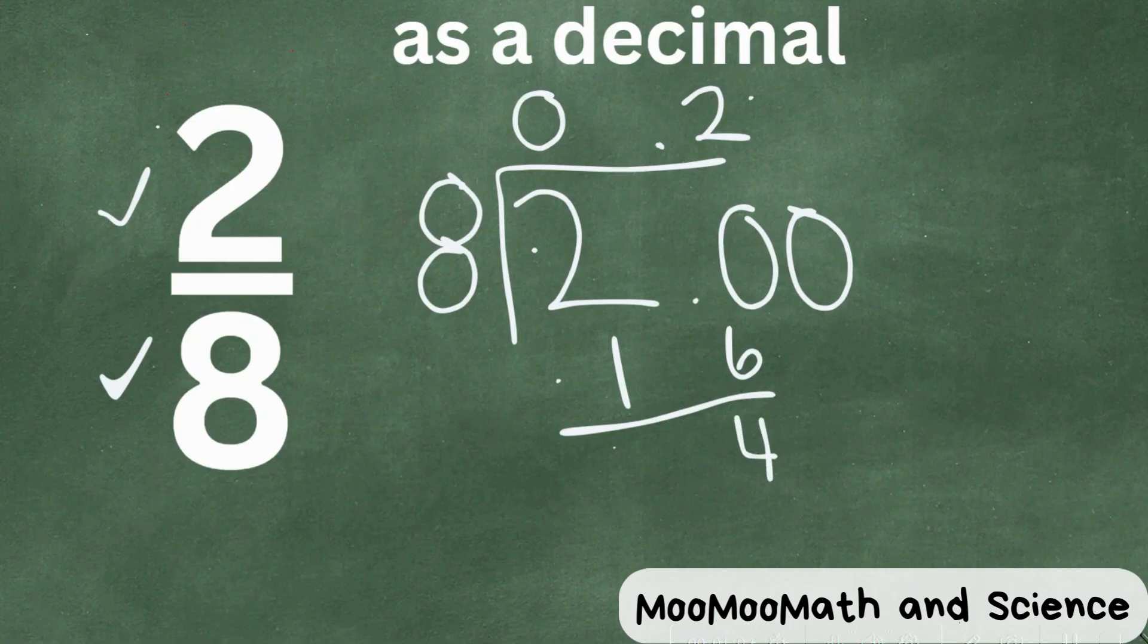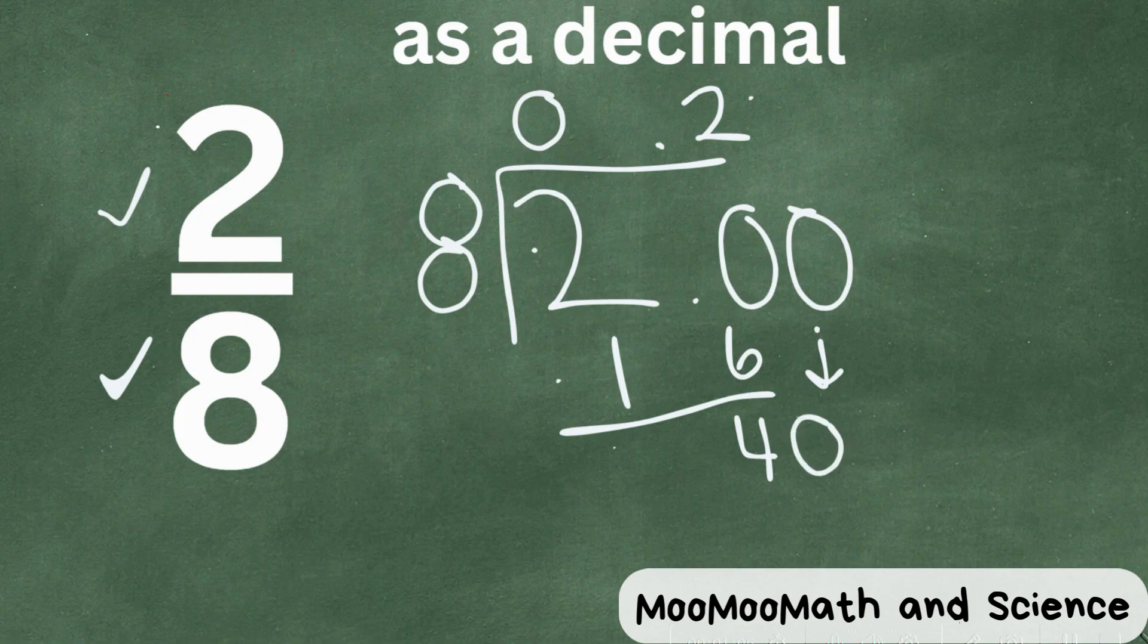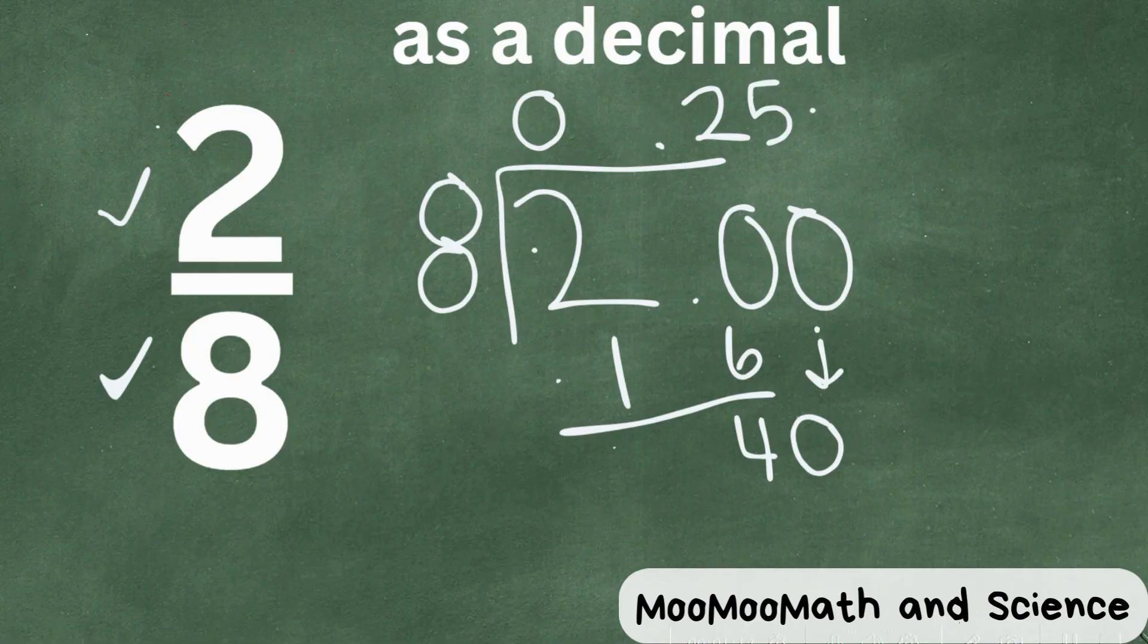Let's bring down the zero. And now eight will go into 40 five times. Five times eight is indeed 40. You have zero remaining.